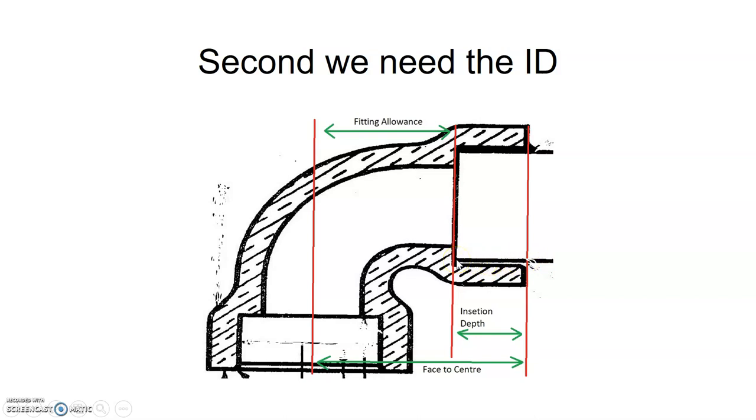If it's a much smaller fitting, we can measure on the outside of the fitting from the face to where the pipe will stop, usually indicated by a little bit of a bump there on the side as it starts to slow down.